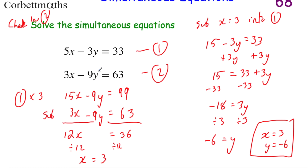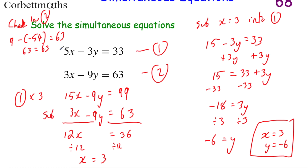Let's check in equation 2. 3x: 3 times 3 equals 9. Subtract 9y: 9 times minus 6 is minus 54, so subtract minus 54. That should equal 63. Now 9 minus minus 54 is 9 plus 54, which is 63. So we get 63 equals 63 — that means we're right: x equals 3 and y equals minus 6.